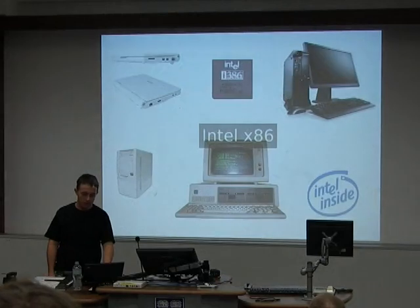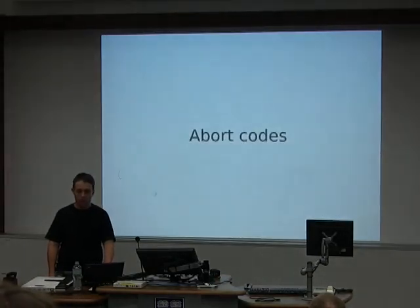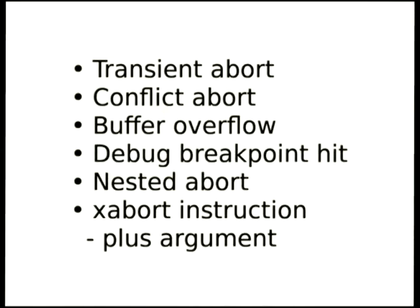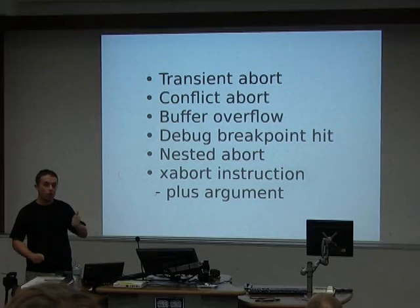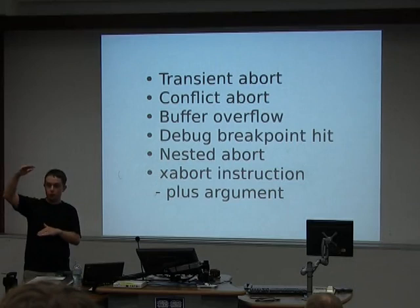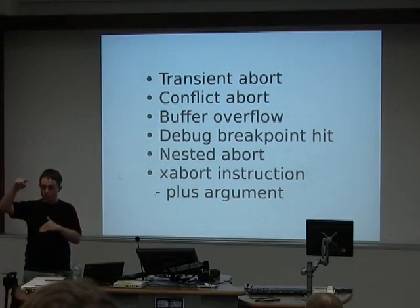Let's dig into Intel x86 specifics. One of the most important things is your abort codes. The most important is the transient abort bit — a best guess by the hardware saying it thinks the abort was a transient problem and if you retry it may work, as opposed to a persistent fault where retrying won't help. Multiple bits can be set at a time. There's a conflict abort if you conflicted with another transaction, a buffer overflow if you overflowed your caches, a debug breakpoint, a nesting abort, and an XABORT instruction abort. With XABORT you can give it a parameter, sprinkle your transaction with multiple XABORTs, and when you abort it tells you which one you hit.